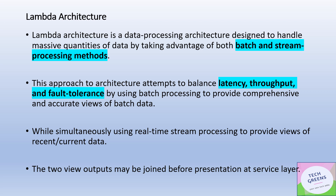Lambda architecture is a data processing architecture designed to handle massive quantities of data by taking advantage of both batch and stream processing. The approach tries to balance latency, throughput, and fault tolerance. We have the batch layer which is a slow-moving cold path, and then the speed layer which is a hot path. This creates a balance between latency from the speed layer and throughput from the batch layer, with a serving layer that combines the two.